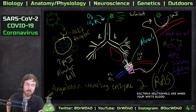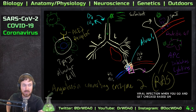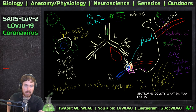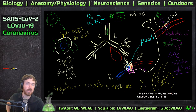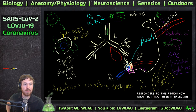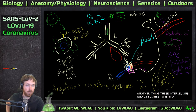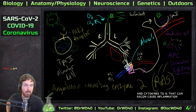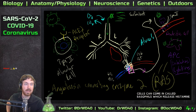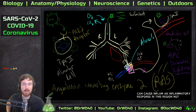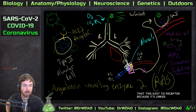Neutrophils are one of your white blood cells - you can tell if you have a bacterial or viral infection when you get checked based on your neutrophil counts. But these cytokines and interleukins bring in more immune responders to this region. Other cells can come in called basophils, which release histamine and can cause inflammation - an inflammatory response in this region. Additionally, this ACE2 receptor, because it's linked to hypertension, can also cause inflammation in this region.